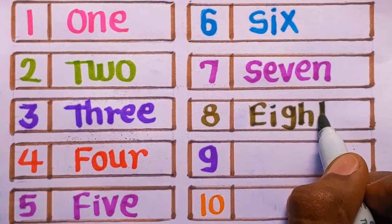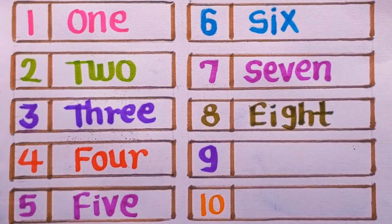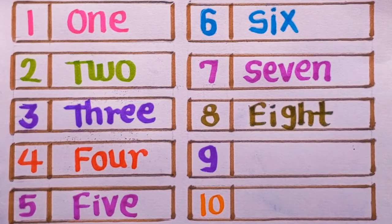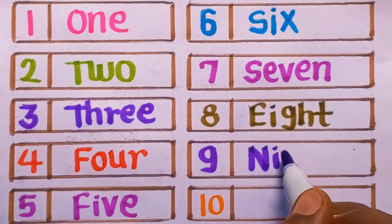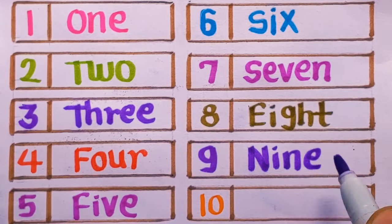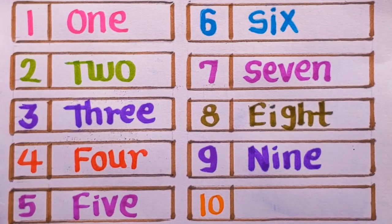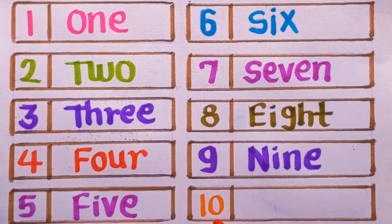G-H-T, eight, olive green color. Number nine: N-I-N-E, nine, violet color.